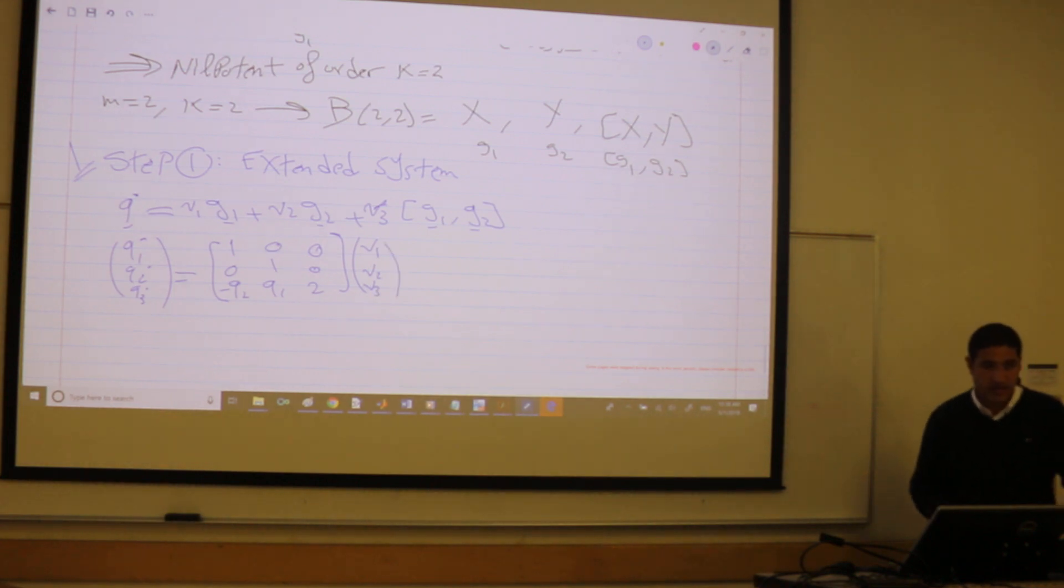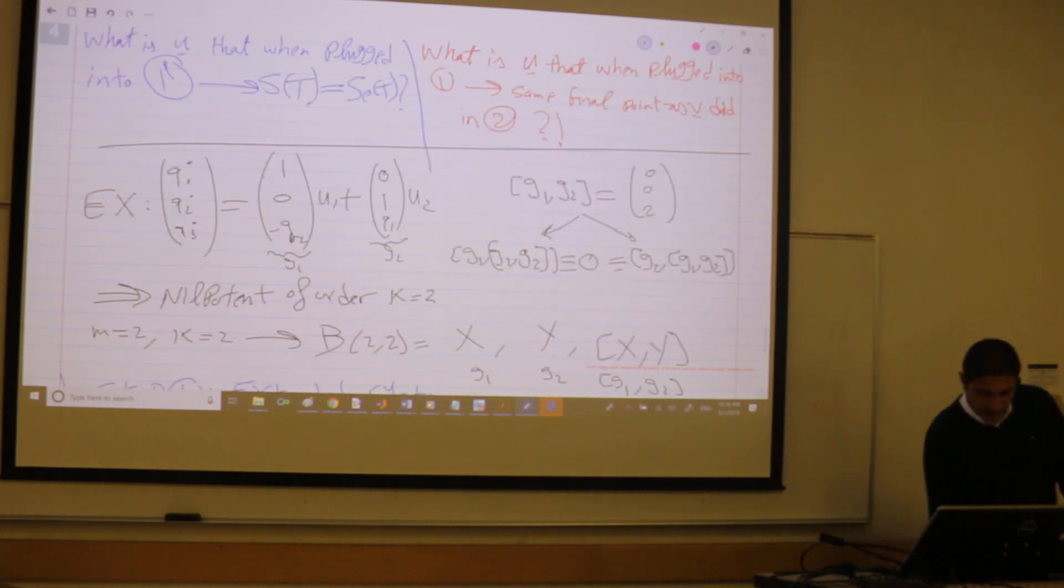So this is Q1 dot, Q2 dot, Q3 dot is equal to G1 was (1,0,-Q2) or something. This is (0,1,Q1). And the Lie bracket was (0,0,2). This is multiplied V1, V2, V3. R here is equal to N. So it's nice to invert.